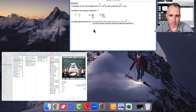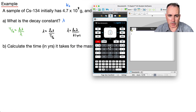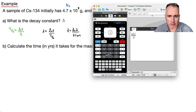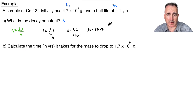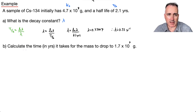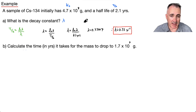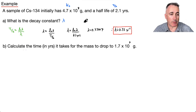So lambda equals natural log of 2 divided by 2.1 years. Using the calculator, that gives 0.33007, so to two significant figures, lambda is approximately 0.33 years to the minus 1. The meaning of this: the decay constant is the probability of a decay, so there's a probability of 0.33 per year of a decay occurring.